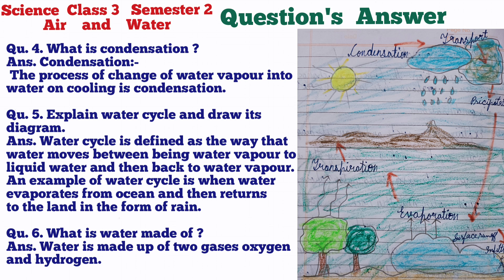Question 5: Explain the water cycle and draw its diagram. The water cycle is defined as the way that water moves between being water vapor to liquid water and then back to water vapor. An example is when water evaporates from the ocean and then returns to the land in the form of rain.